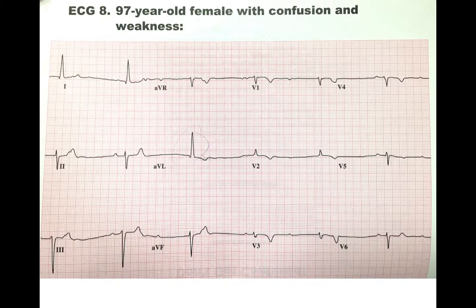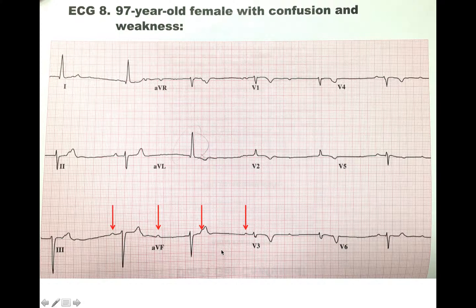The next thing you want to do is look at the rhythm. Let's see if there's a P wave for every QRS. The easiest way to look at that is down here where you see these little P waves. If I mark the P waves using these red arrows, you can see that they are occurring at regular intervals — not irregular, but all at regular intervals. Therefore, this is sinus bradycardia.